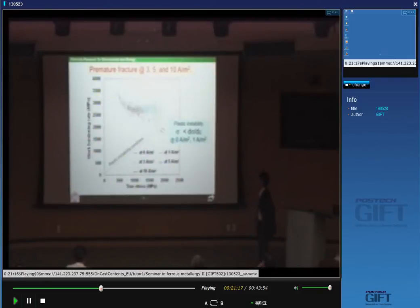Premature fracture. Usually plastic instability is satisfied for ductile material. Plastic instability is a condition where true stress becomes lower than the work hardening rate d-sigma over d-epsilon.